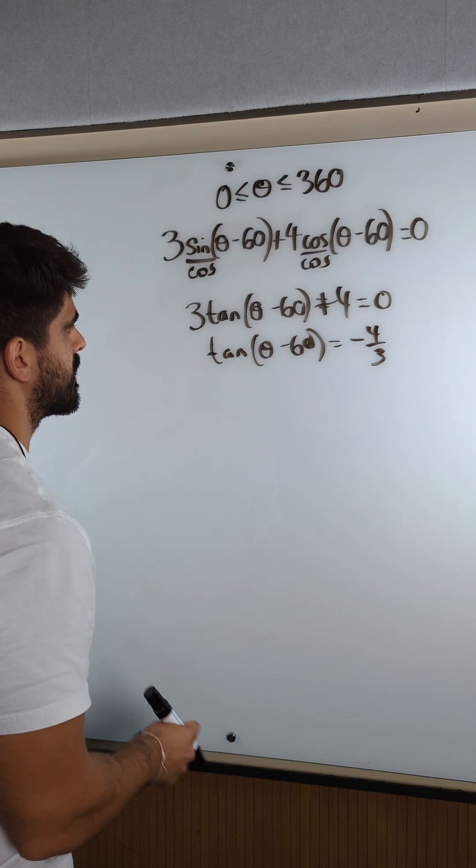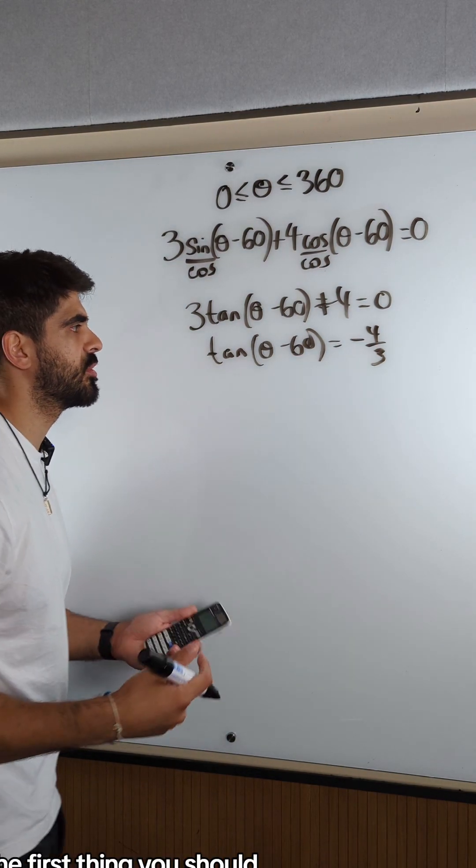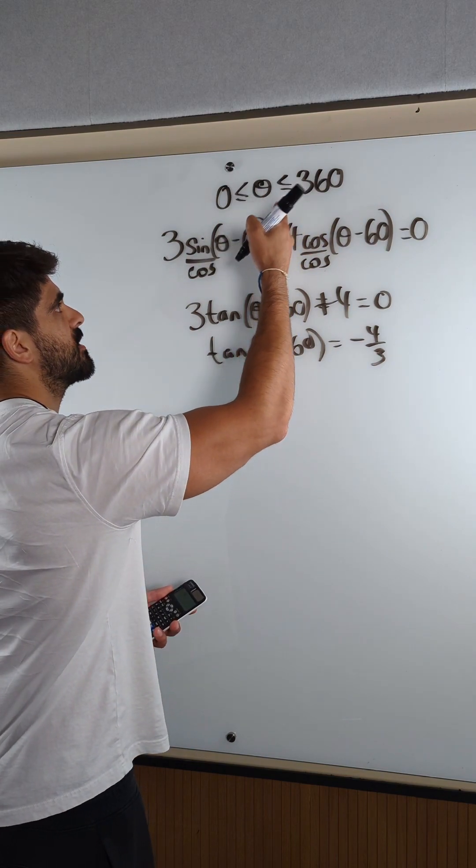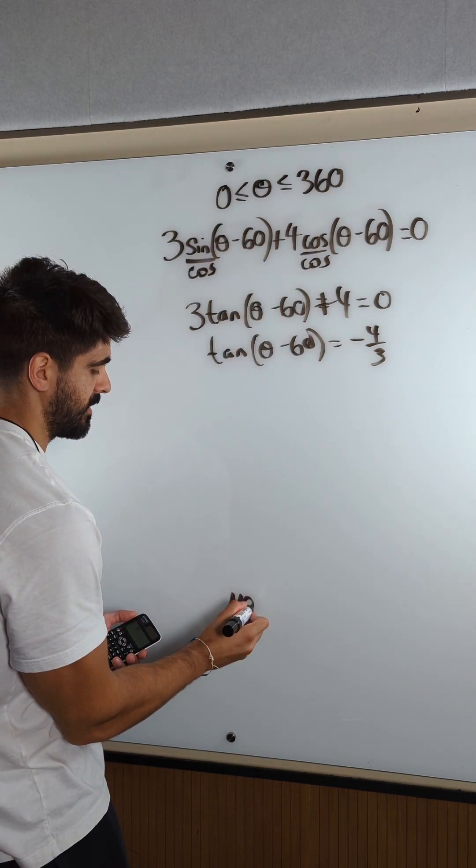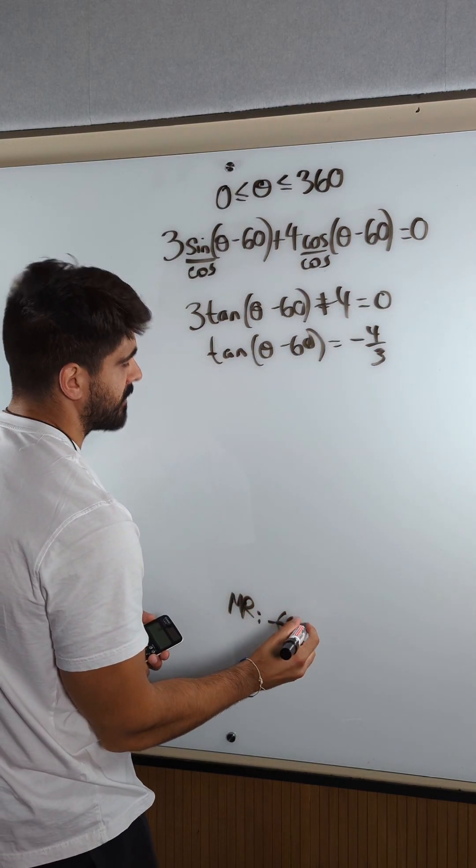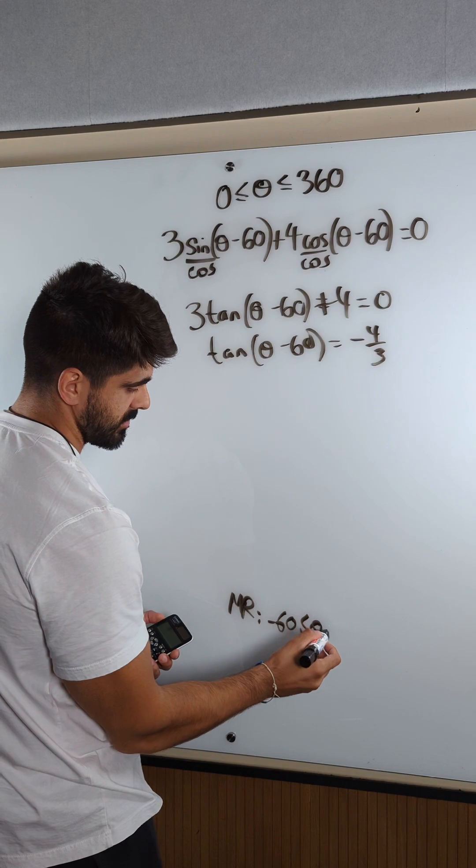Now we're going to do inverse tan on both sides. However, the first thing you should always be doing is modifying the range. That range is between 0 and 360 for theta. We're going to minus 60 from everywhere. I'm just going to write it down here. I would usually write it over on the right. So minusing 60 everywhere, you would get this.